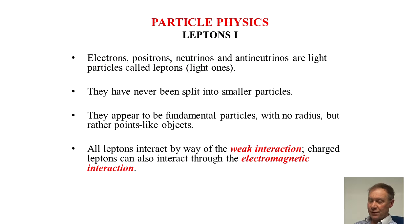First of all, we'll look at leptons. Electrons, positrons, neutrinos and antineutrinos are all light particles called leptons. They have never been split into smaller particles and appear to be fundamental with low radius but rather point-like objects.